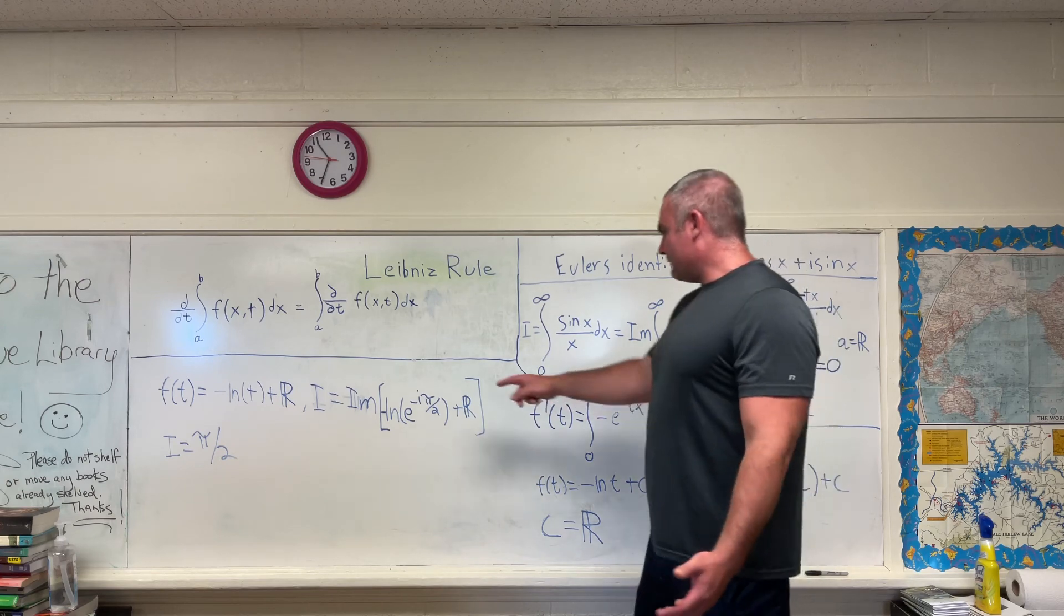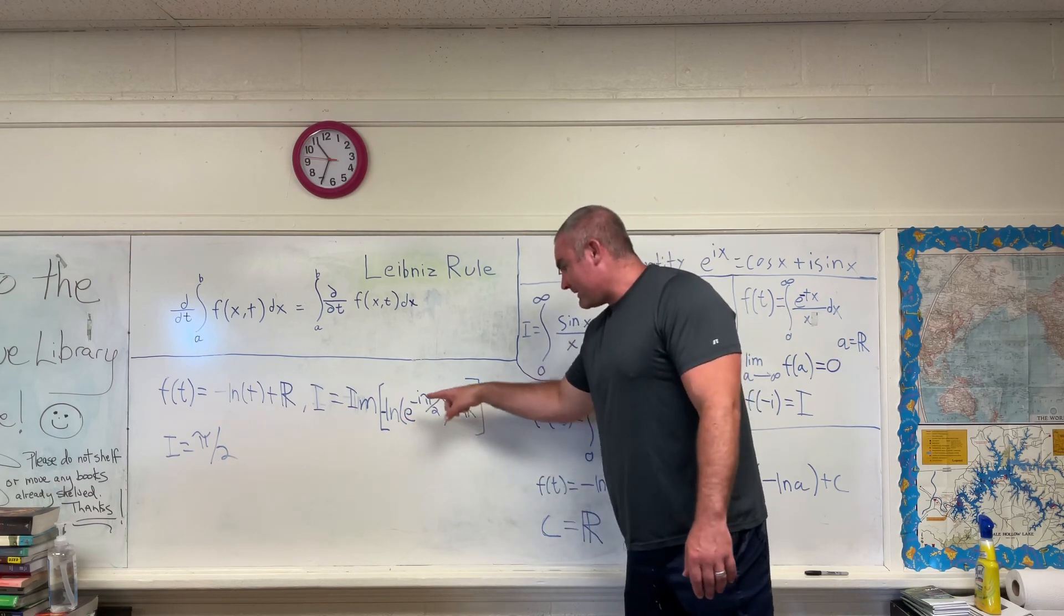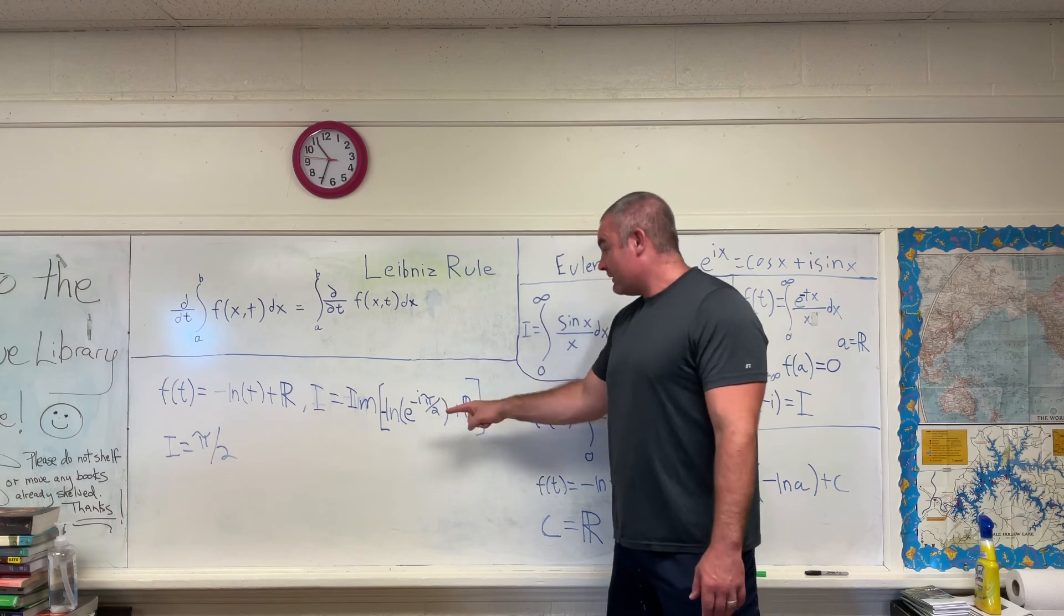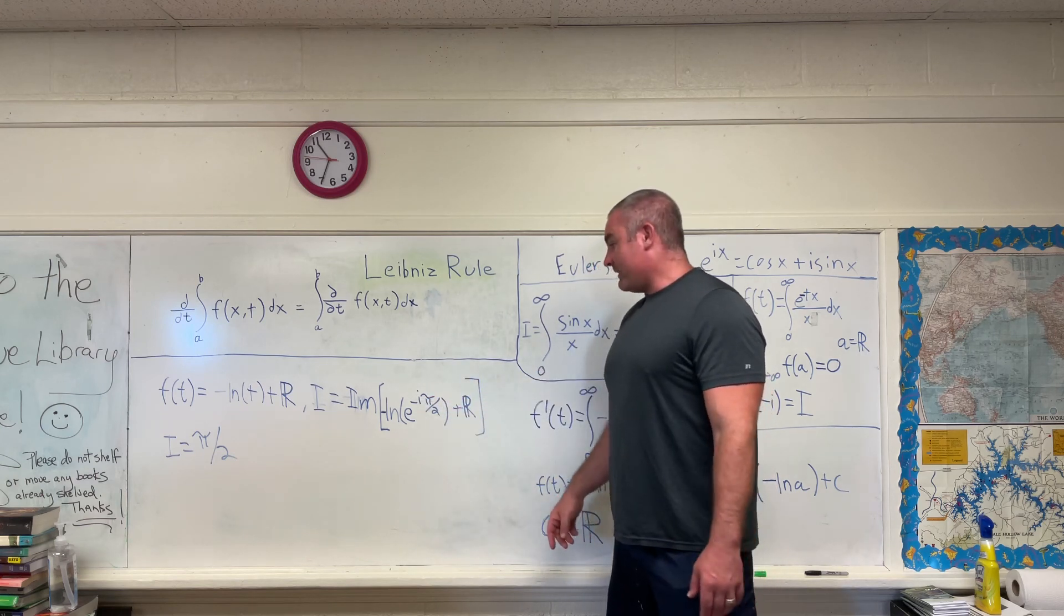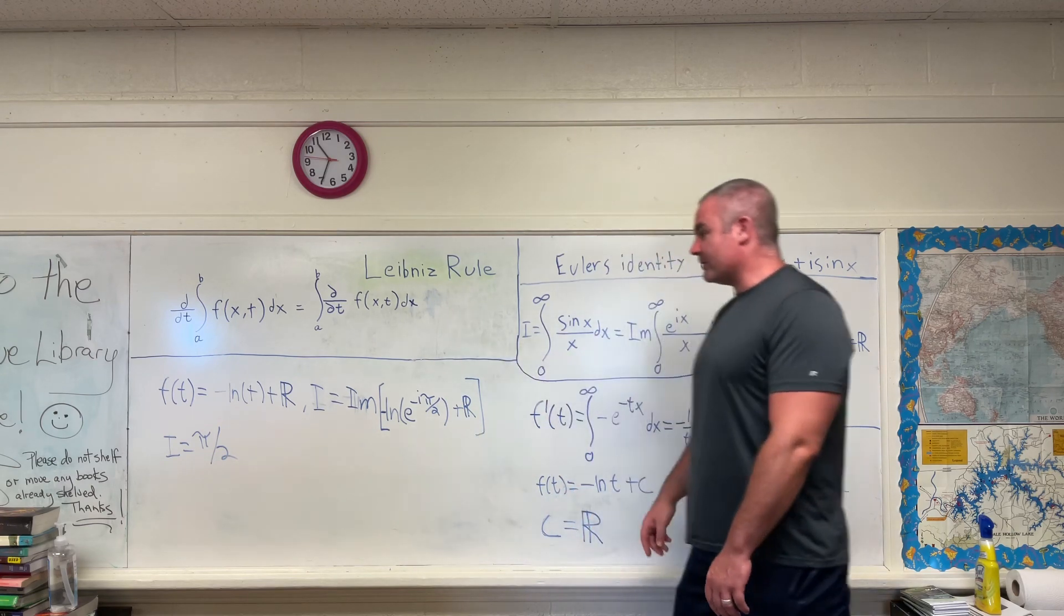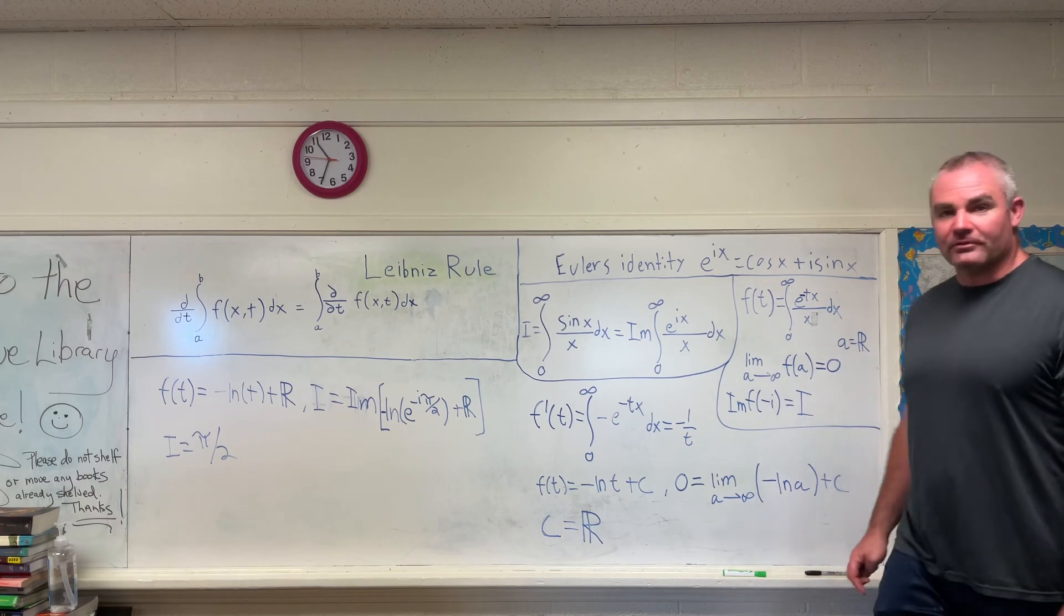And of course, if you use the properties of logarithms, the natural log and the e will cancel out giving you a negative negative, which is positive, i pi over 2. And then when you take the imaginary part of that, you simply get pi over 2. And that's what we got last time. So there's our answer. And I hope you enjoyed that.